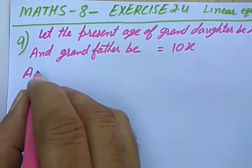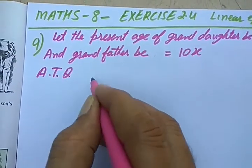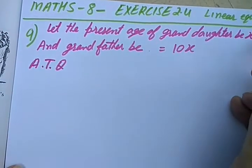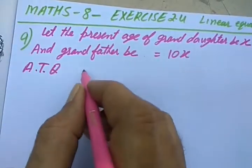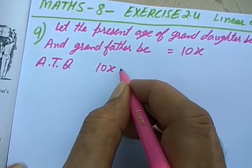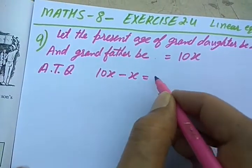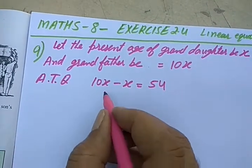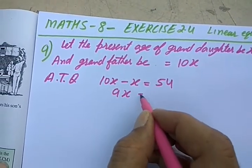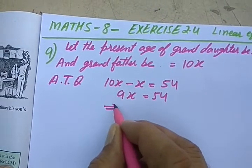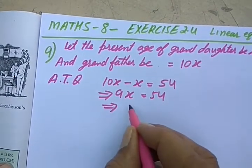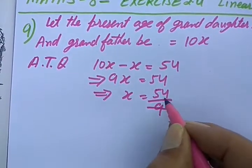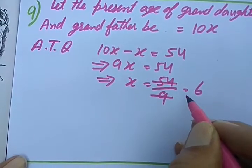So, according to the question's condition, if we subtract this from this, we get 54. 10X minus X gives us 54. That means 9X is equal to 54 and X is equal to 54 upon 9, which gives you 6.